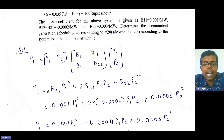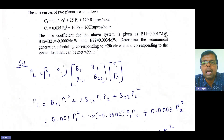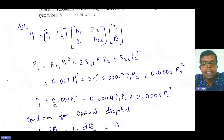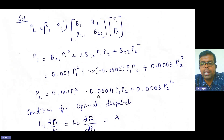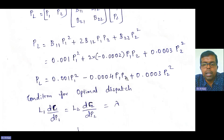After simplifying the matrix multiplication, we get: PL = B11 × P1 squared + 2 × B12 × P1 × P2 + B22 × P2 squared. Substitute the given B values carefully. Be very careful with the decimal values — do not round off. If you miss even one zero in any coefficient, the entire solution will go wrong.